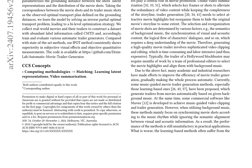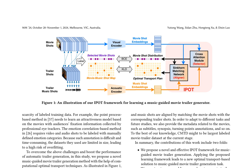A two-tower encoder is used to derive the latent representations of movie and music shots, and an attention-assisted synchurn matching network parameterizes the grounding distance between the shot's latent representations and the distribution of the movie shots. The correspondence between the movie shots and trailer music shots is treated as the observed optimal transport plan defined on the grounding distances, and the model is learned by solving an inverse partial optimal transport problem.